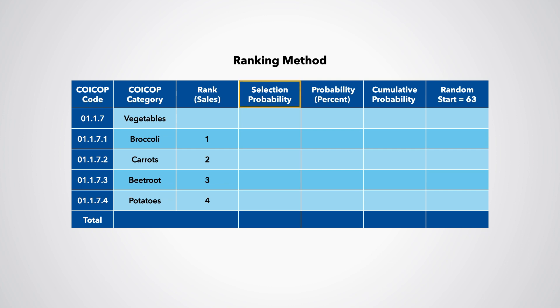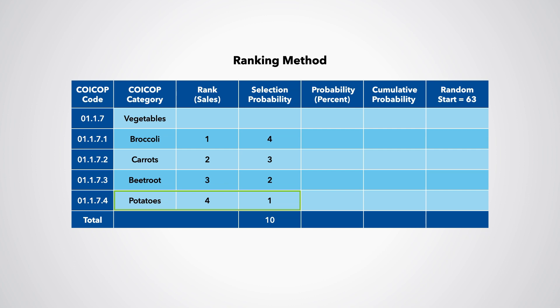With ranking, the most important item should be assigned the largest value. To do this, the inverse of the ranking is used. Broccoli was ranked number 1 and is assigned a value of 4. Carrots were ranked number 2 and assigned a value of 3. Beetroot was ranked 3 and assigned a value of 2. And finally, potatoes were ranked number 4 and assigned a value of 1.